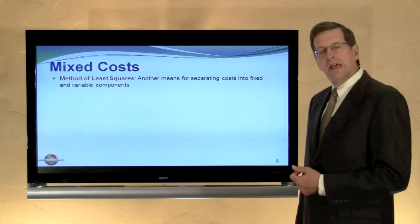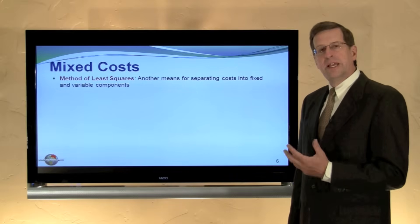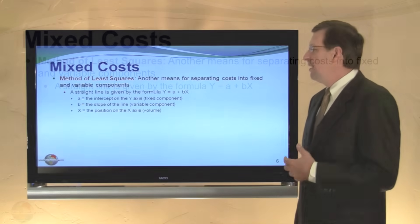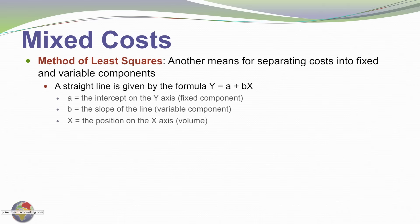A more statistically valid method for cost behavior analysis is the method of least squares. It's based on regression analysis. Recognize that a straight line can be defined by the formula y equals a plus bx where a is the intercept which would infer our fixed cost component, b is the slope of the line which infers our variable cost component and x is the position on the x-axis, that is the volume level.